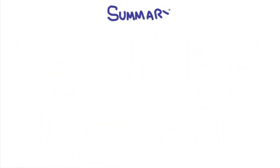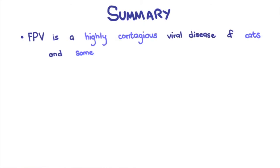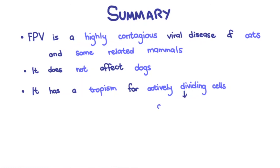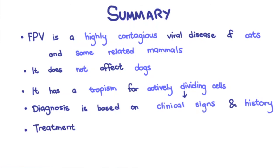To recap: feline panleukopenia virus is a highly contagious viral disease of cats and some related mammals. It does not affect dogs. The virus has a tropism for actively dividing cells, such as leukocyte precursors, intestinal crypts, and the developing cerebellum of perinatal kittens. Clinical signs often relate to the infection of these actively dividing cells. Diagnosis is based on clinical signs and history. Treatment involves fluid therapy and supportive care.